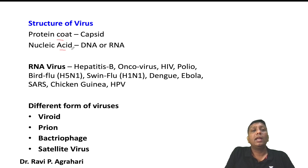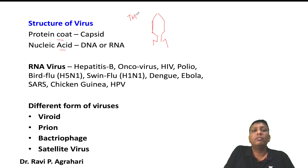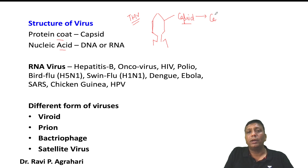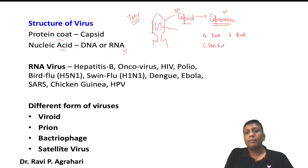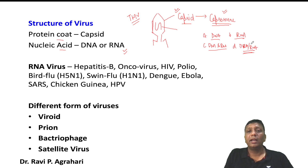Regarding the structure of viruses: viruses are generally made up of a protein coat and nucleic acids. The outermost covering is called the capsid, which is made up of protein. The capsid is made up of many small units called capsomeres. Inside the capsid is the nucleic acid, which may be DNA or RNA. This has been an exam question: which nucleic acid is present in viruses? The options are DNA, RNA, DNA and RNA, or DNA/RNA. The correct answer is DNA or RNA — any one of them will be present.